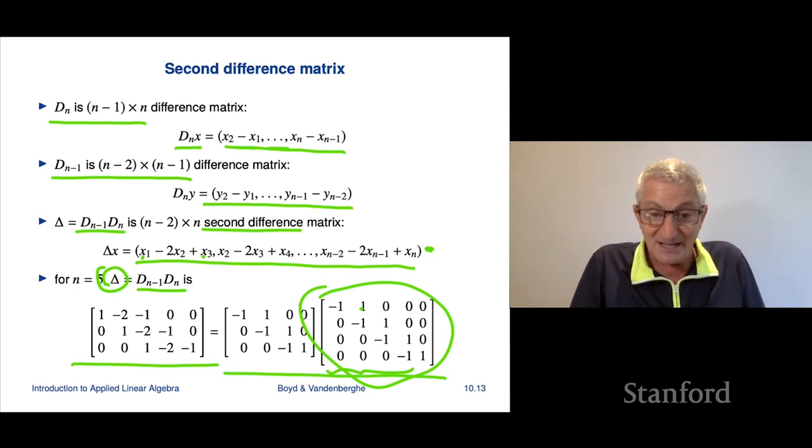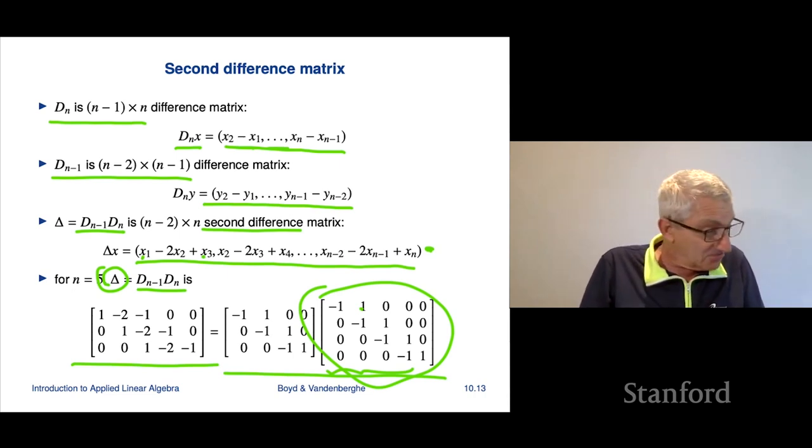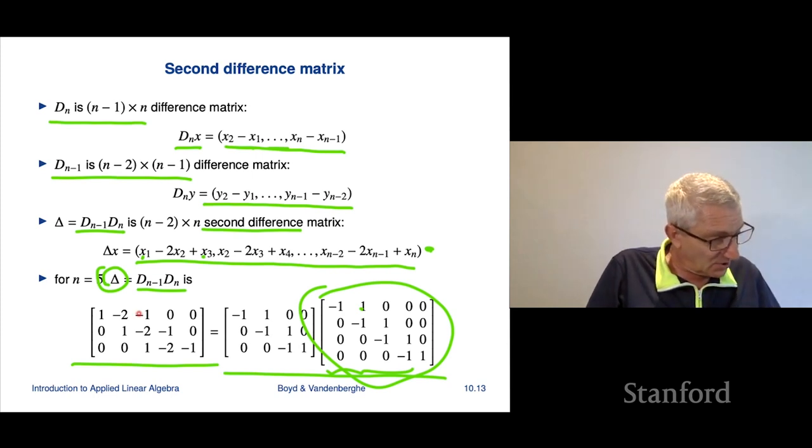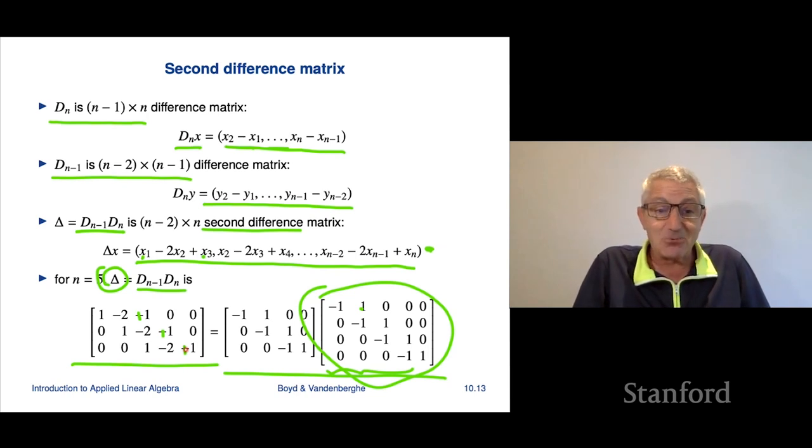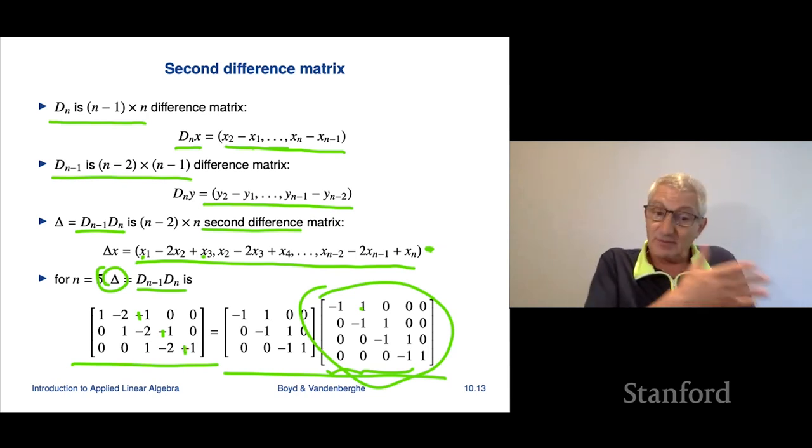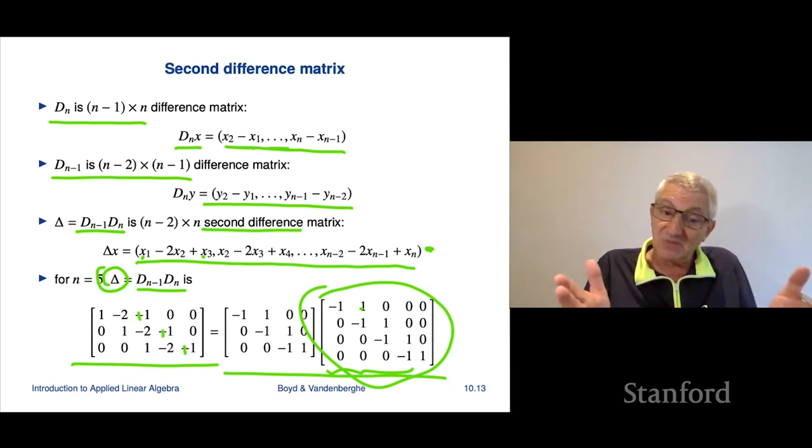It just shows you that you can compose two things, and it all kinda makes sense, I think. Let's see. I think it makes sense. Actually, I think it's wrong because I think these should all be pluses. But anyway, aside from having a typo in the slides, it kinda makes sense.